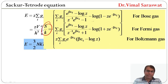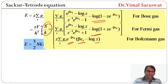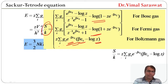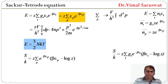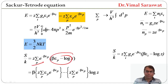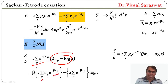For Boltzmann's gas, S/k equals z * sigma_i g_i * e^(-beta * e_i) * (beta * e_i - log z). In momentum space, S/k equals z * sigma_p e^(-beta * e_p) * (beta * e_p - log z). Expanding this gives S/k equals beta * z * sigma_p e_p * e^(-beta * e_p) minus z * sigma_p e^(-beta * e_p) * log z.